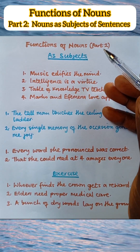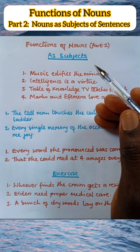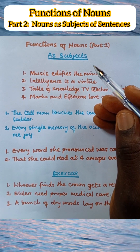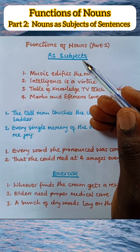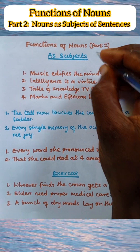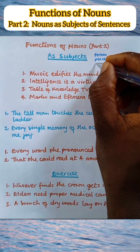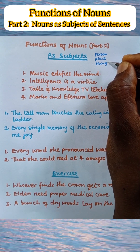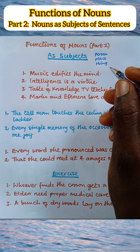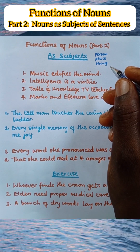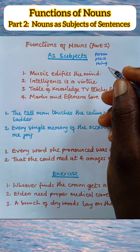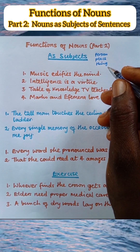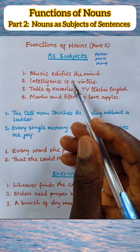Functions of nouns — this is Part 2. In Part 1, I listed six functions of nouns and promised that in subsequent videos I am going to explain each of the functions. In this video, we want to look at nouns as subjects of sentences. The subject of a sentence refers to the person, place, or thing that performs the action of the verb in the sentence, or that the sentence refers to. This implies that any word or group of words that occupies the position of a subject in a sentence is automatically a noun. We are going to identify the subject in each of the following sentences.